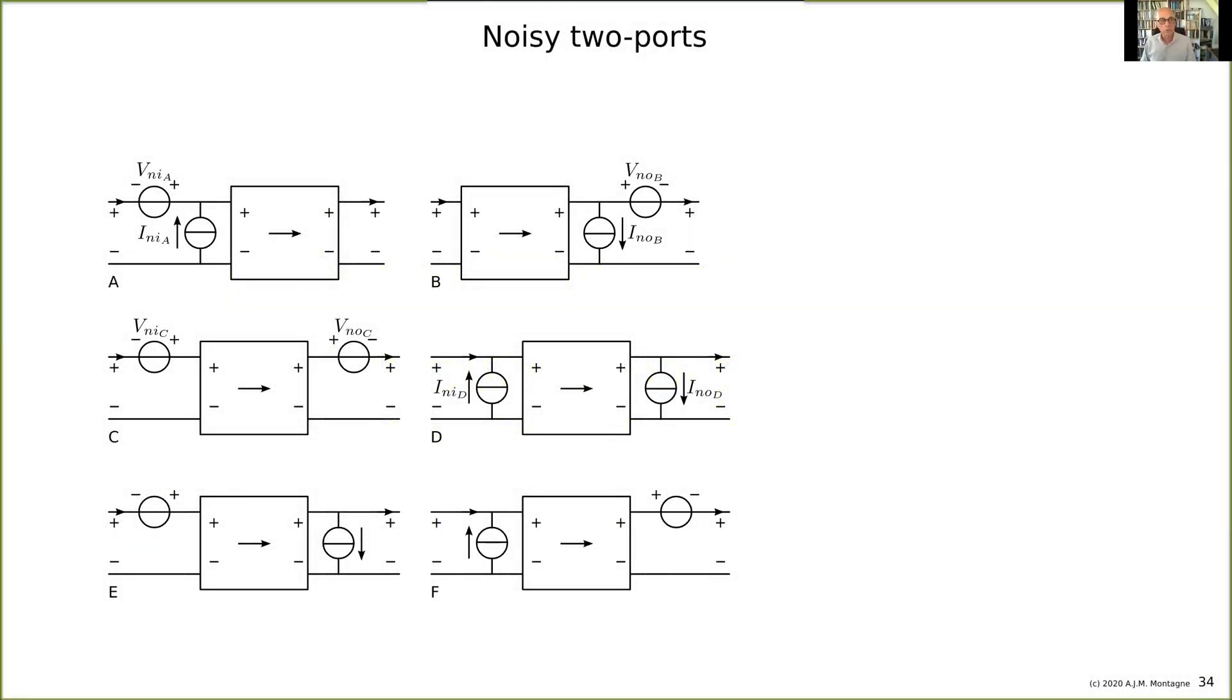Now let's go to amplifiers. We have seen that we model them as two-port for the functional behavior, and let's add noise sources to the amplifier because we know up front, before we are going to design the amplifier, that it will add noise. So how can we model that?